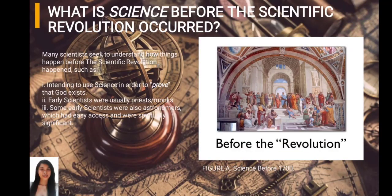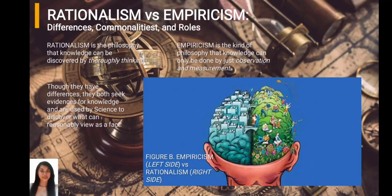The first topic is: what is science before the revolution? Before the revolution, people and famous scientists would mostly base their findings almost entirely on reasoning. The simple difference between rationalism and empiricism is that rationalism uses knowledge based on reasoning or logic, while empiricism refers to knowledge based on experiences and experimentation.